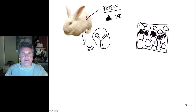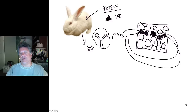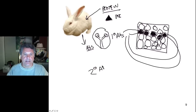We take antibodies derived from the injected rabbit - we call these primary antibodies because they are the antibodies directed against our protein of interest. We incubate our tissue with those primary antibodies, and the primary antibodies will only bind to those cells which have the protein of interest.